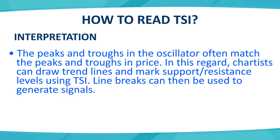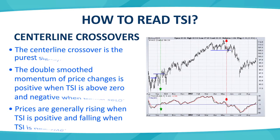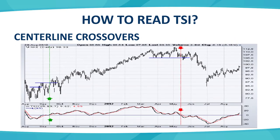TSI peak and trough prices can be used to get resistance and support, draw trend lines, and generate signals. Moving to centerline crossovers — this is a simple strategy for trend identification. The centerline is the zero level. If TSI is above the zero line, price change is positive, meaning price is rising. If TSI is negative, prices tend to move downward. For example, in mid-May, TSI was in the negative zone and prices broke down in a downward trend.